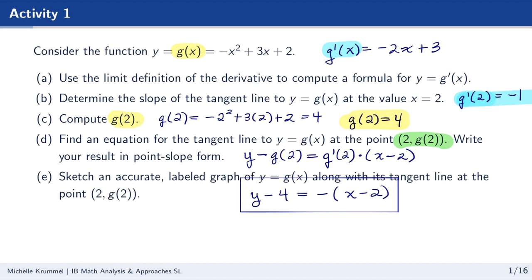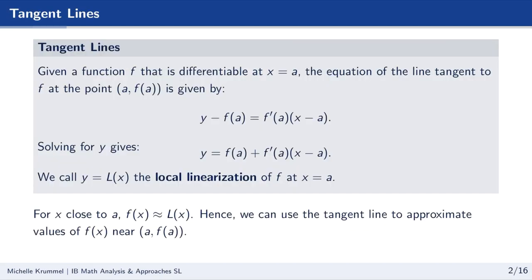We're also asked to sketch an accurate labeled graph of y equals g of x along with its tangent line at the point 2 comma g of 2. Given a function f that is differentiable at x equals a, the equation of the tangent line at the point a comma f of a is y minus f of a equals f prime of a times x minus a. Here a is the x-coordinate of the point of tangency, which is also called the point of tangency.